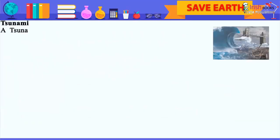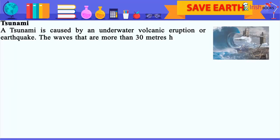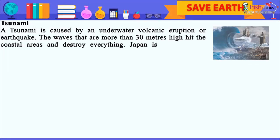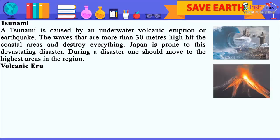Tsunami: A tsunami is caused by an underwater volcanic eruption or earthquake. The waves, which can be more than 30 meters high, hit coastal areas and destroy everything. Japan is prone to this devastating disaster. During a tsunami, one should move to the highest areas in the region.